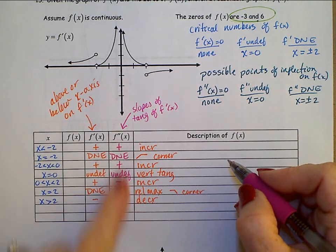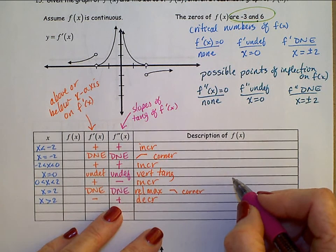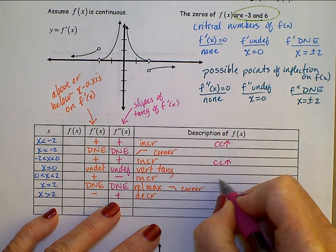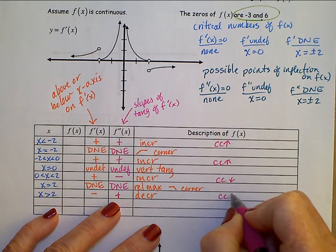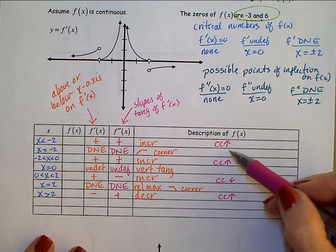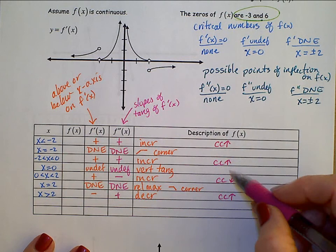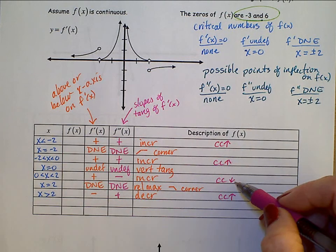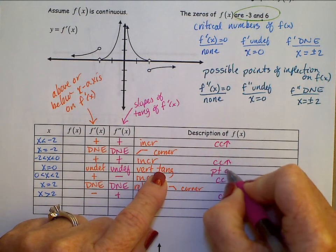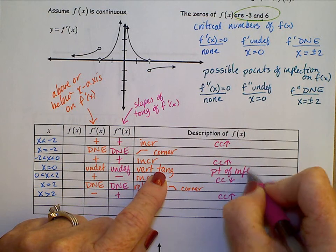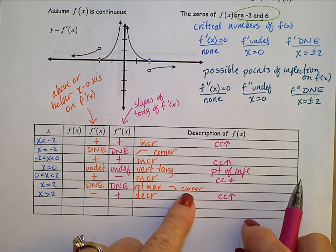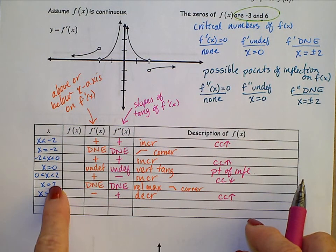f double prime tells us that f of x is concave up or concave down. The only place we could have a possible point of inflection is where we change concavity. At x equals 0, we change from concave up to concave down, and there is a tangent line, so this is a point of inflection. At x equals 2, we change from concave down to concave up, but there is no tangent line because there's a corner — so x equals 2 is not a point of inflection.